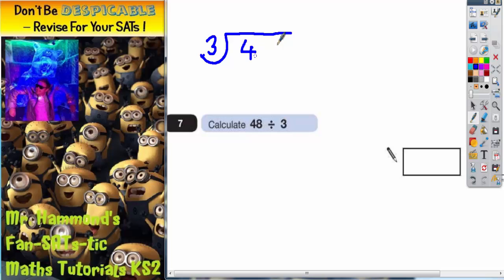How many 3's go into 48? So how many 3's go into 4? That's once with 1 left over. 1 lot of 3 is 3, and there's 1 left over to make 4.